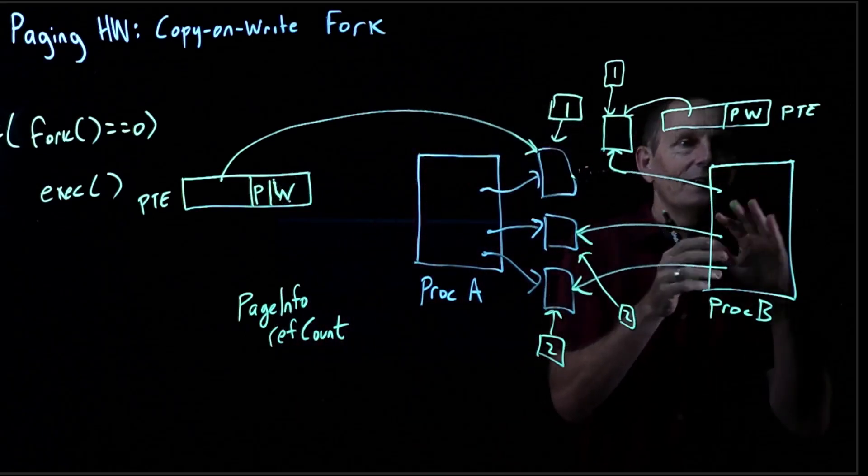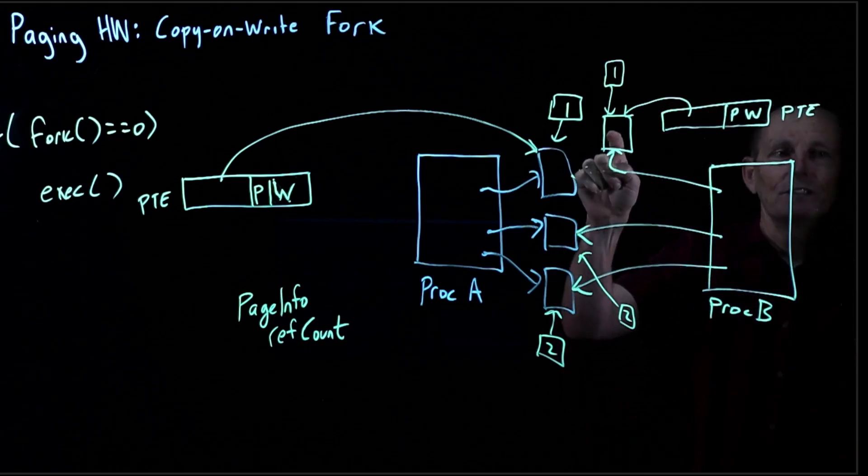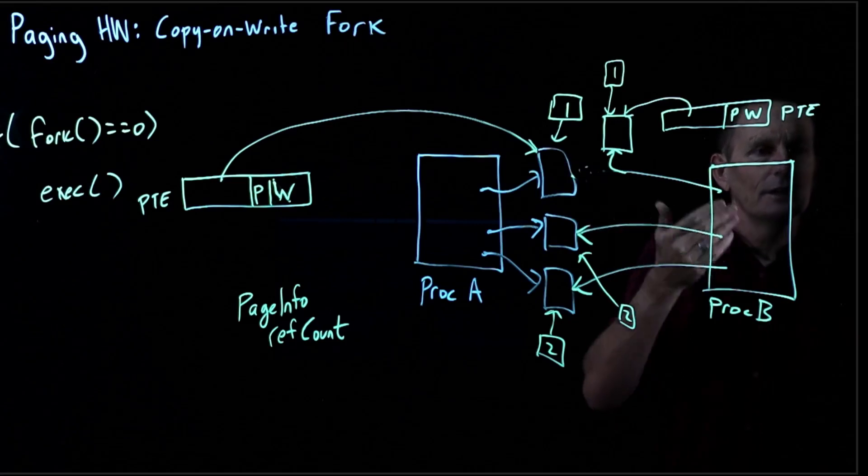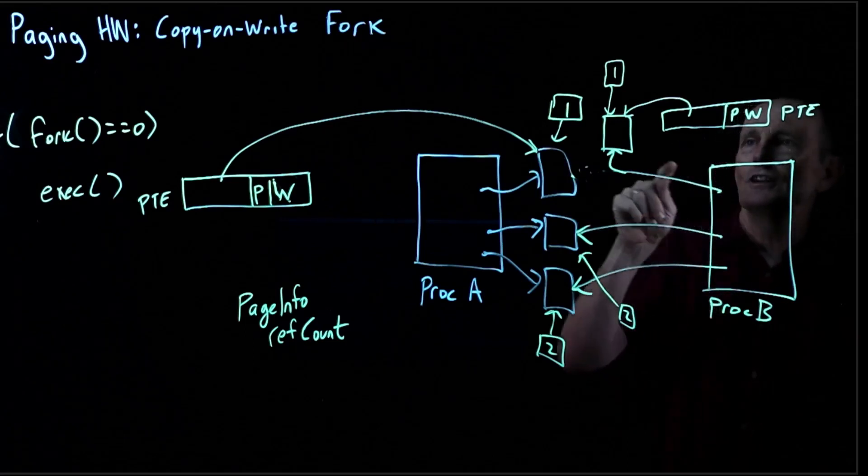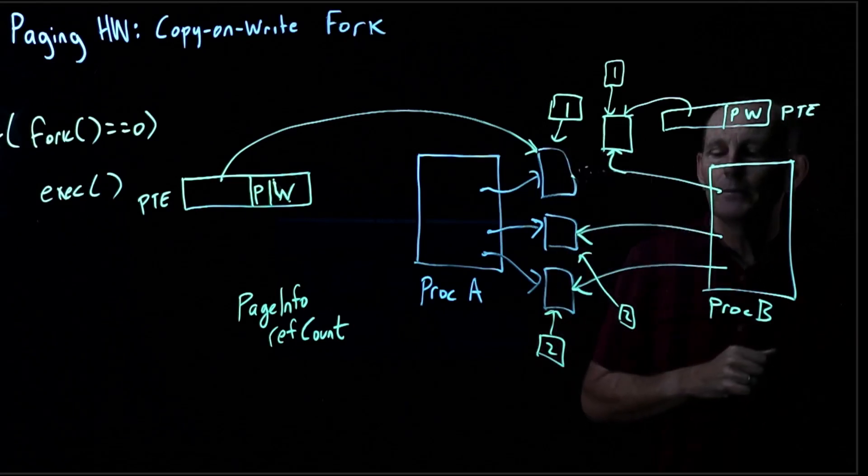Process B now has its own copy of this page. After the page fault returns, it can re-execute the write instruction and directly write to this page. So it now has its own copy.